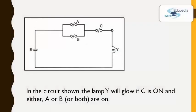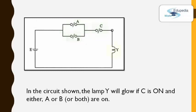Now take a look at this electronic circuit. From the letter E it represents the battery, from the letter Y it represents the lamp, and letters A, B, C represent three switches. In this circuit the lamp Y will glow if C is on and either A or B or both are in the on state. Using this information we need to draw the logic circuit, and before that we need to obtain the boolean algebraic expression for this circuit.